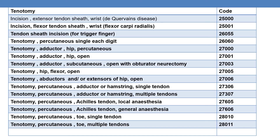For incision of the extensor tendon sheath at the wrist to treat de Quervain's disease, the CPT is 25000. For incision of the flexor tendon sheath at the wrist (e.g., flexor carpi radialis), the CPT is 25001. For tendon sheath incision to treat trigger finger, report 26055.